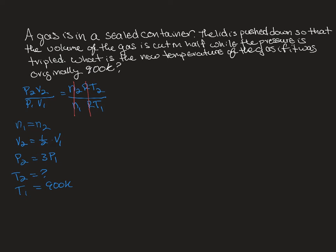So now I can sub in P2 is 3 times P1, and V2 is one half V1. And then I have that over P1 and V1. And T2 is my question mark, and T1 was 900 Kelvin.